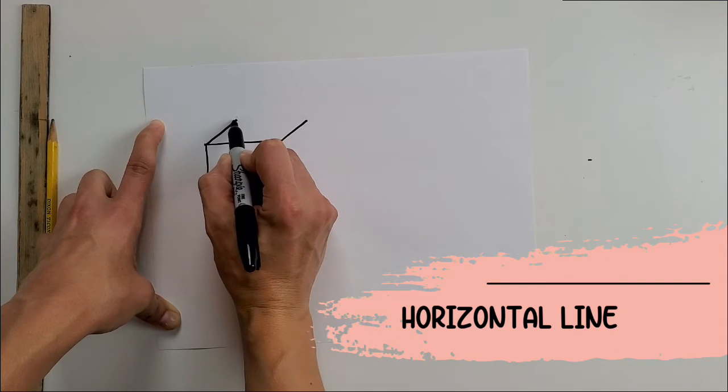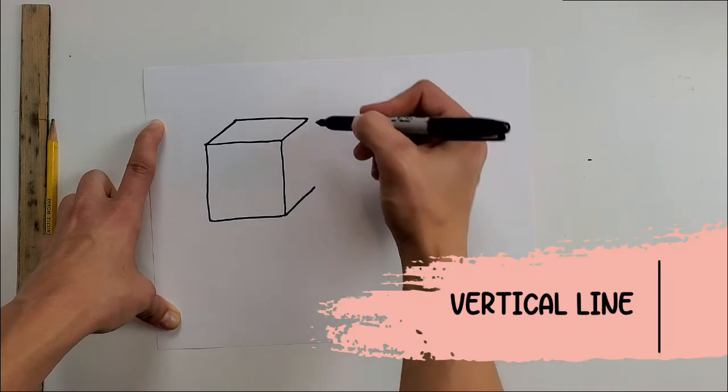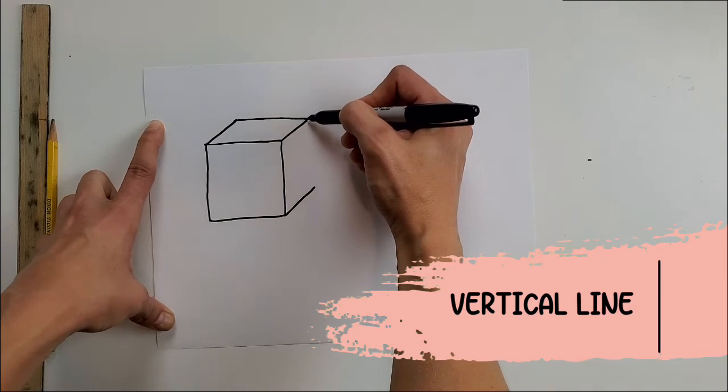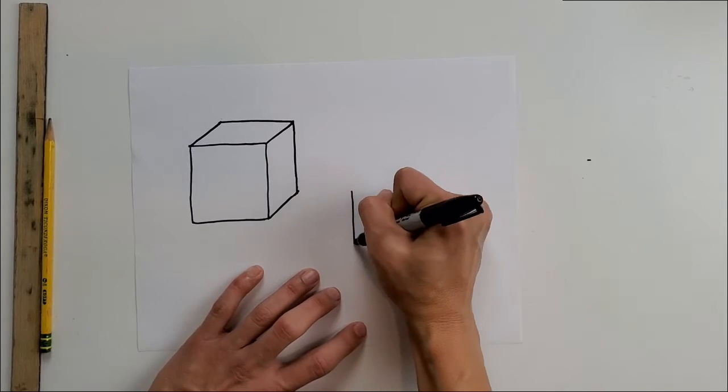So a horizontal line is a line that goes from side to side like that, and then a vertical line is a line that goes from top to bottom or up or down, like that. Also do it this way.